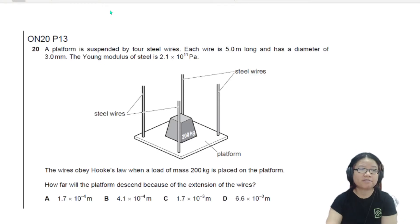In this example, we have a platform suspended by four steel wires, and each wire is five meter long and has a diameter of 3 mm and the Young modulus of steel is given. There's lots of information. We have L, we have D, and then we have the Young modulus E.